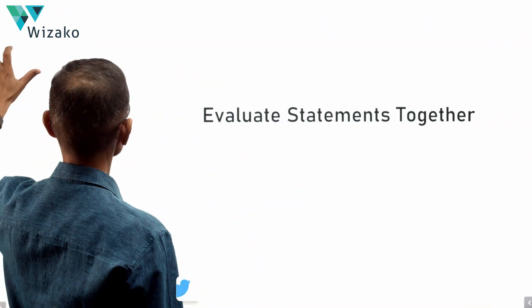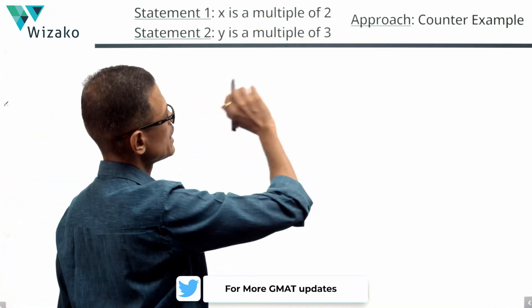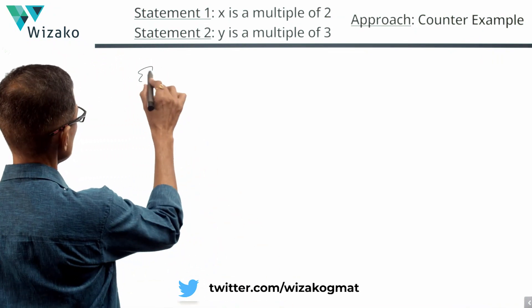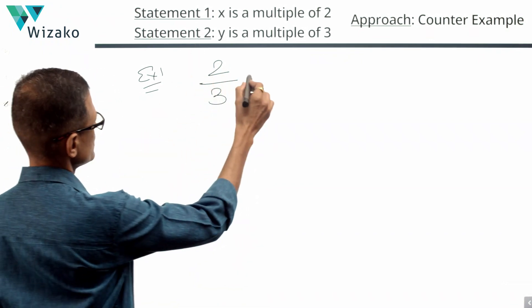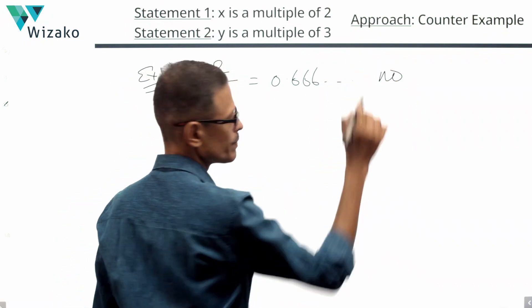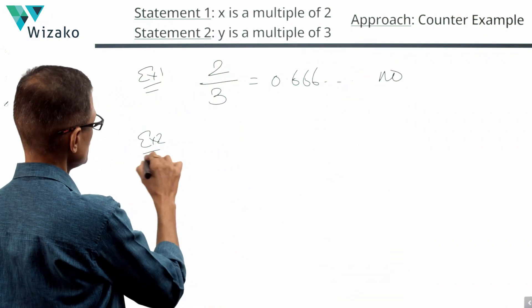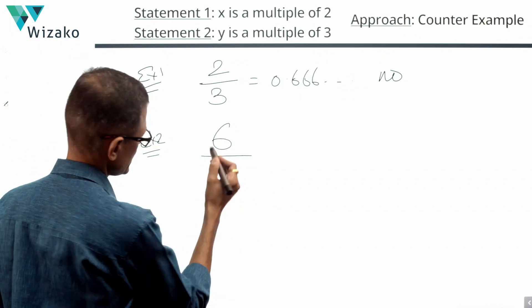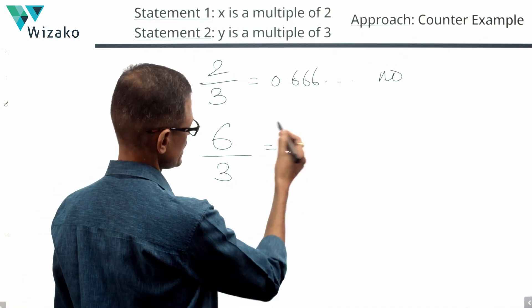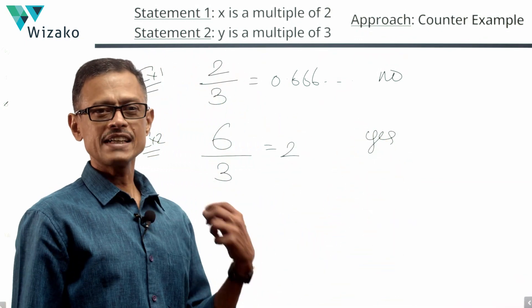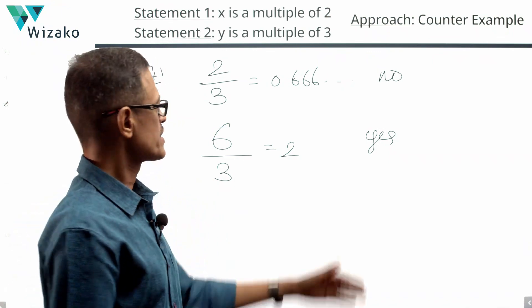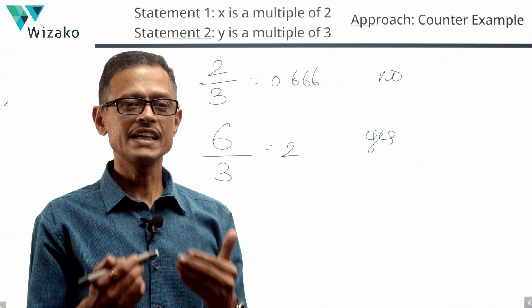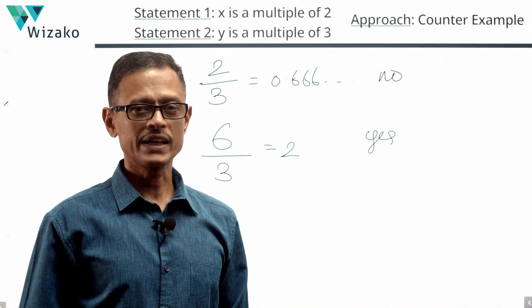Combining both statements: x is a multiple of 2 and y is a multiple of 3. Example 1: x = 2, y = 3 — both conditions satisfied. 2/3 = 0.6666, a non-terminating decimal, so the answer is no. Example 2: x = 6, y = 3 — x is a multiple of 2, y is a multiple of 3. 6/3 = 2, which is a terminating decimal. Despite combining the statements, both examples satisfy the given information and we still get a no and a yes — counterexamples exist. The data is not sufficient to determine whether x/y is a terminating decimal. Choice E is the correct answer.